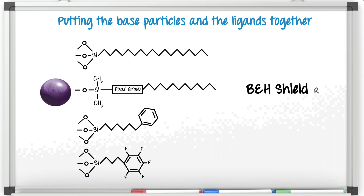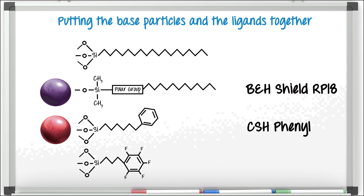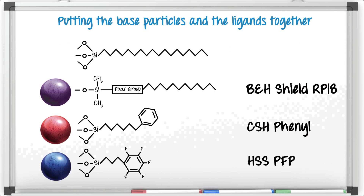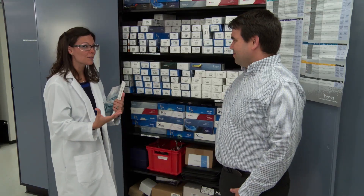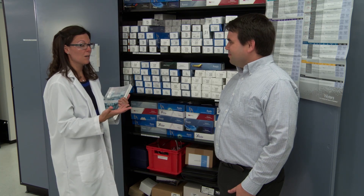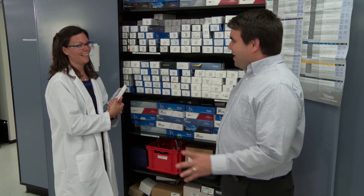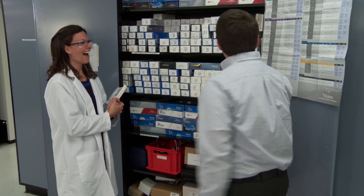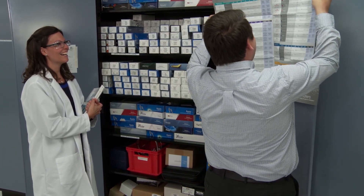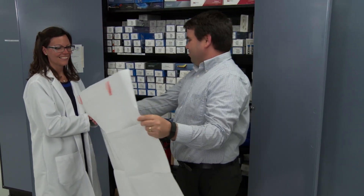Now we put the two together. First, you have a BEH particle with the Shield RP18 embedded polar ligand. Then move down to our charged surface hybrid, which has the phenyl ligand. Next is a high strength silica particle with a pentafluorophenyl ligand. And lastly, the Cortex solid core base particle with the alkyl C18 ligand. They're just so helpful — thank you. Basically that's a lot more scientific than what I was doing before, which was just choosing the column I used last time. As a going away present, I'm going to give you this column selectivity chart, so next time you're lost, you'll find your way.